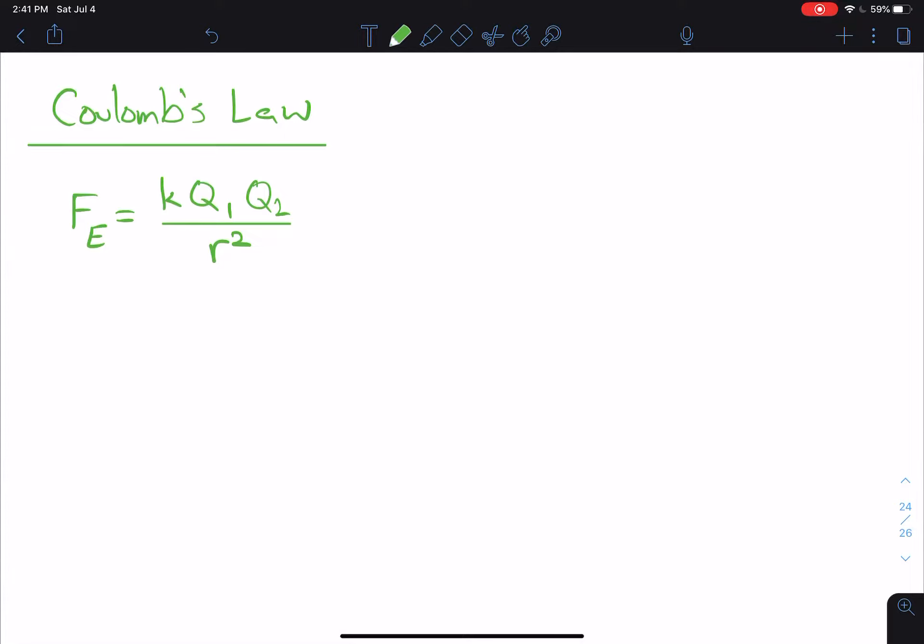We already know that force is a vector. So, that's where the conceptual side of Coulomb's Law comes in. It tells us how to determine the direction of the electrostatic force.